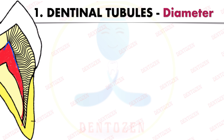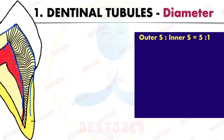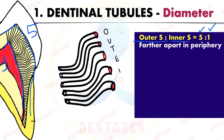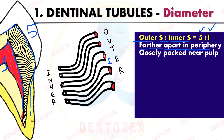The outer surface to inner surface ratio of dentine is five to one — meaning if the outer surface area is five, the inner surface is only one. So on the outer surface, dentinal tubules are farther apart, whereas on the inner side they are more closely packed.